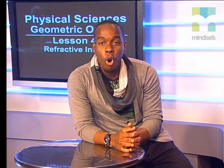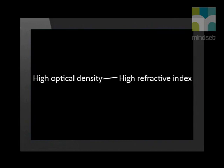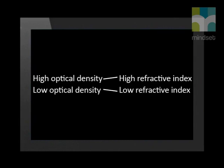This means that the glass bead is more optically dense than air. The larger the refractive index of a substance, the slower light travels through the substance, and the more it refracts light. Remember, optical density is a measure of the speed light travels through a substance. Light travels slower in a substance that is more optically dense. So a substance with a high optical density will have a higher refractive index, and a substance with a lower refractive index has low optical density.